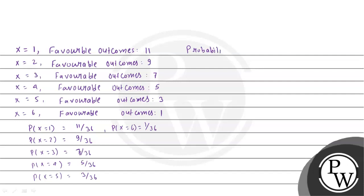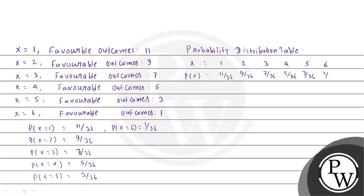The probability distribution table has X values 1, 2, 3, 4, 5, and 6, with corresponding probabilities P(X): 11/36 for X=1, 9/36 for X=2, 7/36 for X=3, 5/36 for X=4, 3/36 for X=5, and 1/36 for X=6. Here Xi are the event values and Pi are their probabilities. From this probability distribution table we will find the mean and variance.